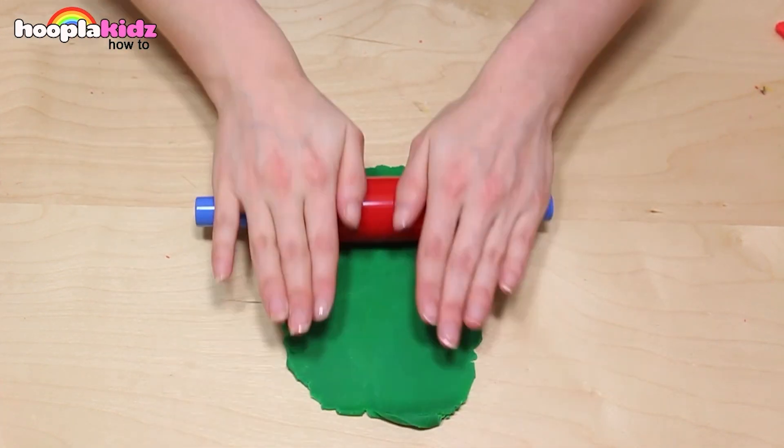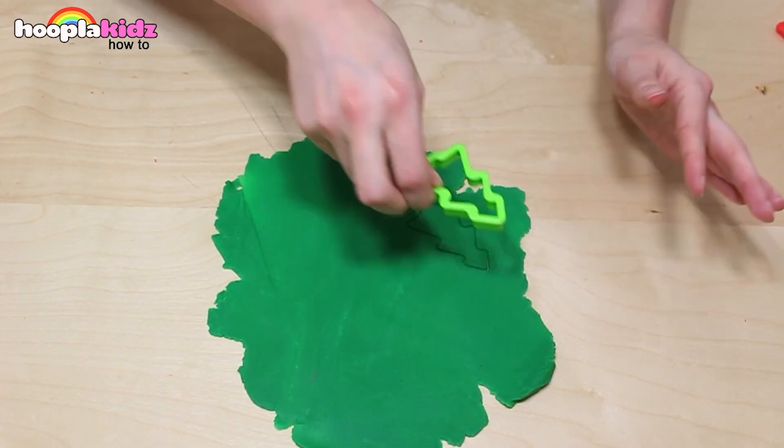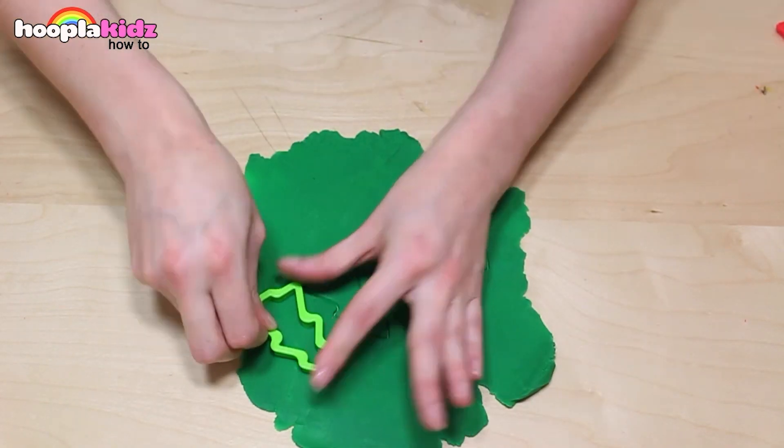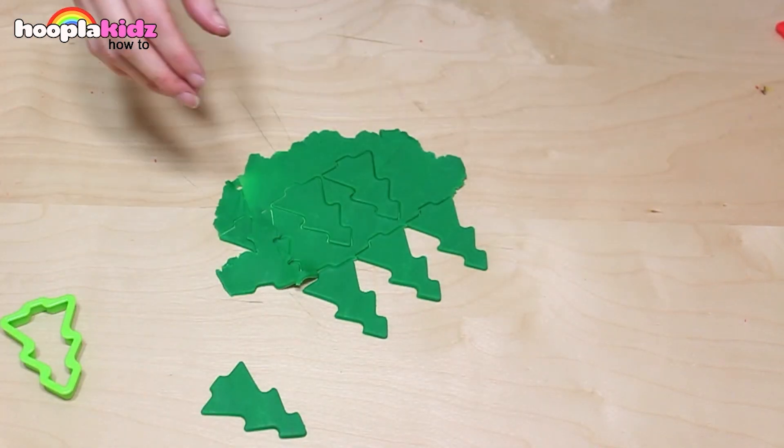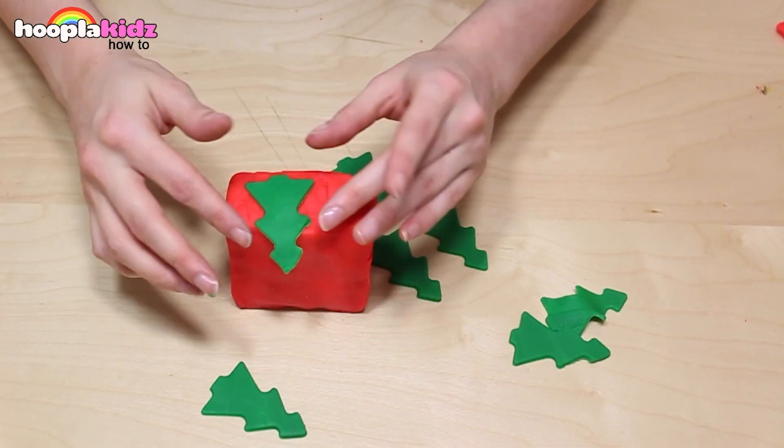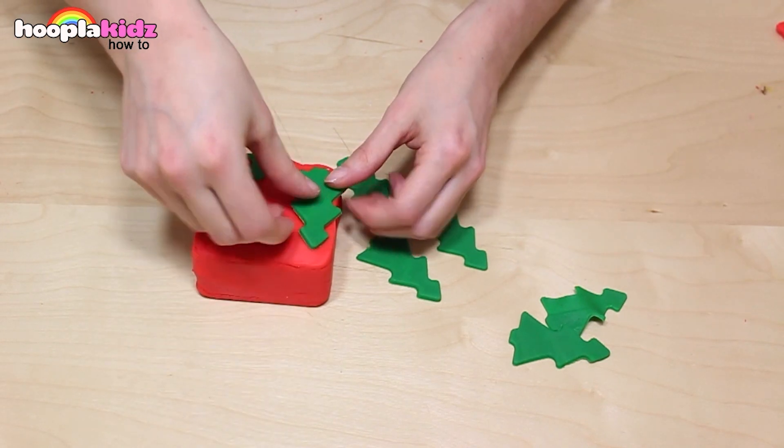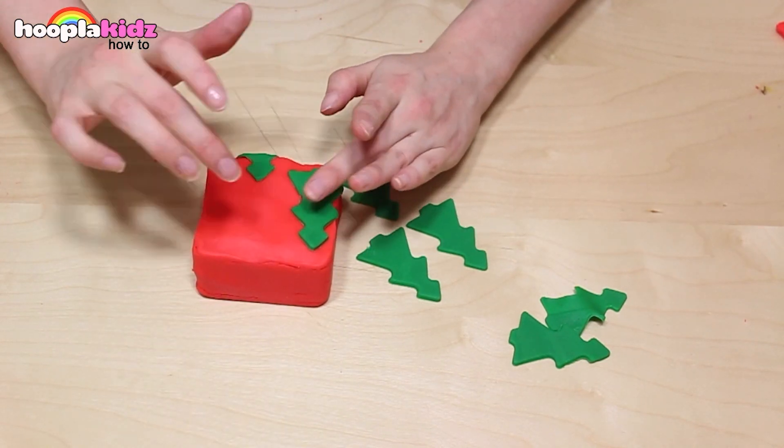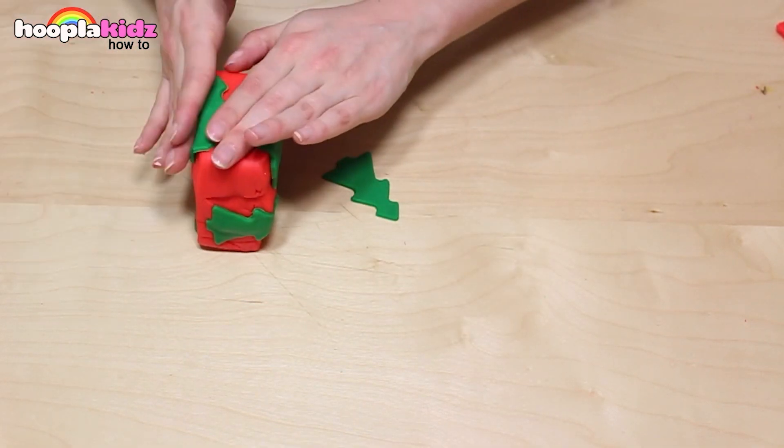Now let's take some dark green Play-Doh and roll it flat as well. I'm using my cookie cutter in the shape of a Christmas tree to cut out some shapes. Perfect! These look great! I'm going to use them to decorate my red present. The green really pops. Looking good!